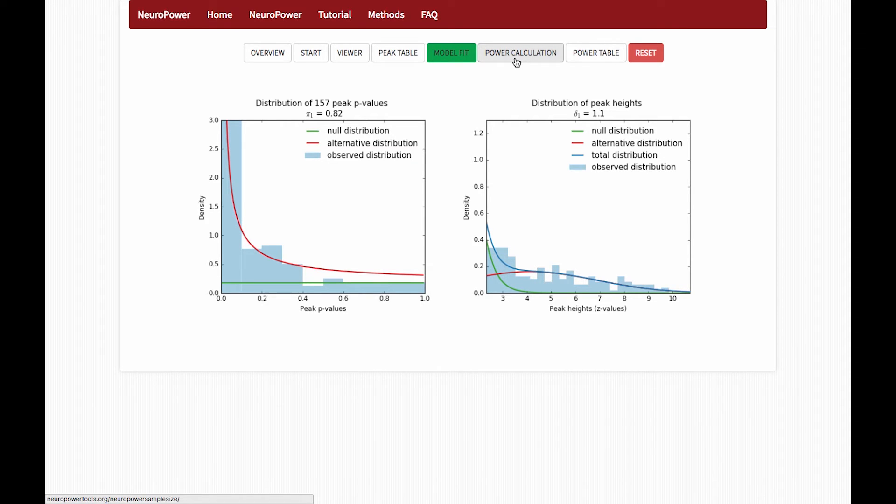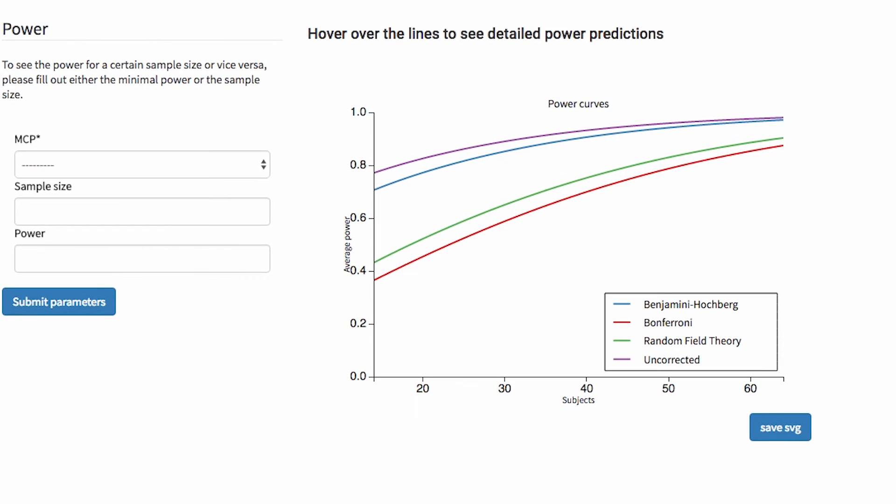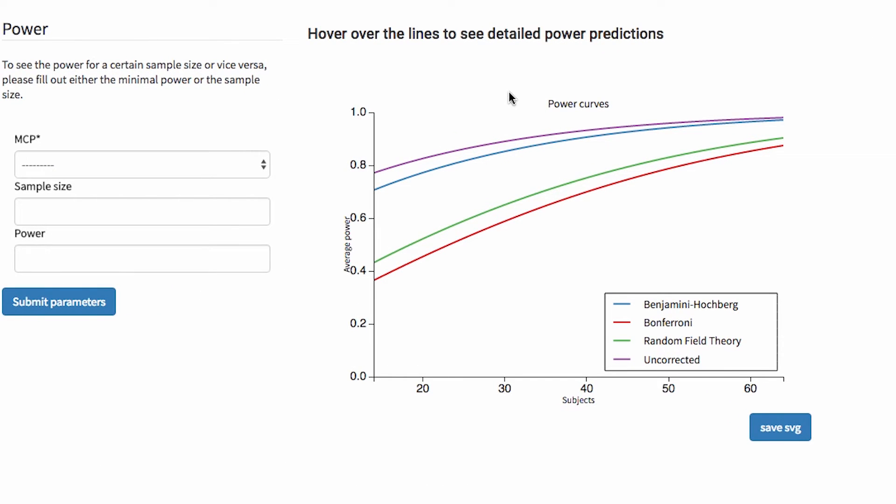Lastly, the power calculation is what you're most interested in, and this will generate power curves to show you what sample size you'll need for a certain power. So, in this case, we see different kinds of corrections. In purple, there's uncorrected. In blue, there's some other correction mechanisms I've never heard about. It's probably pretty cool though. And in green is random field theory, in addition to Bonferroni in red.